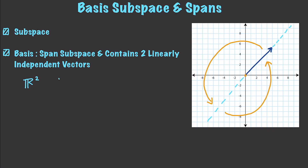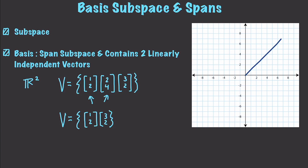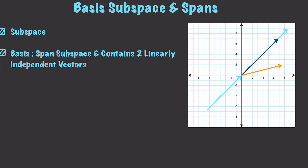For example, if you had a vector set with vectors [1,2], [2,4], and [3,2], a basis wouldn't allow you to have both [1,2] and [2,4] — you could only have one of those because they are dependent. An example of a basis would simply be the vector set with [1,2] and [3,2]. A vector going in the same direction as another would be considered linearly dependent, while a vector pointing in a different direction would be considered linearly independent.